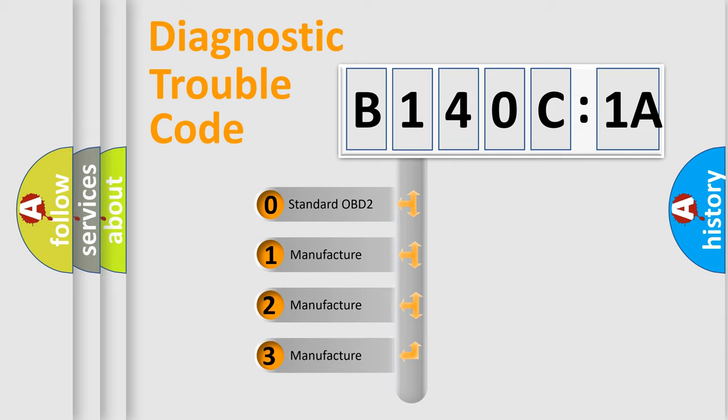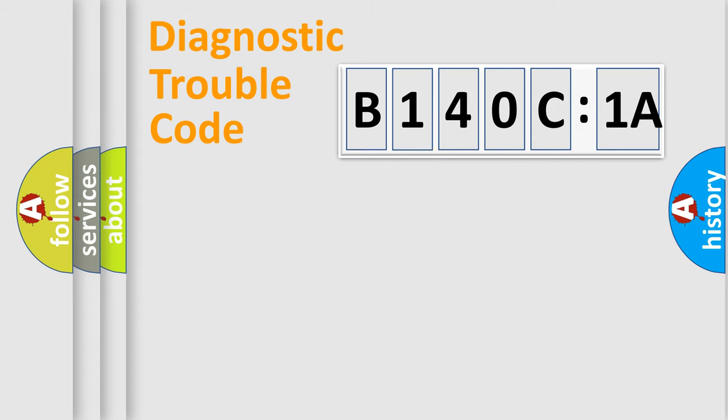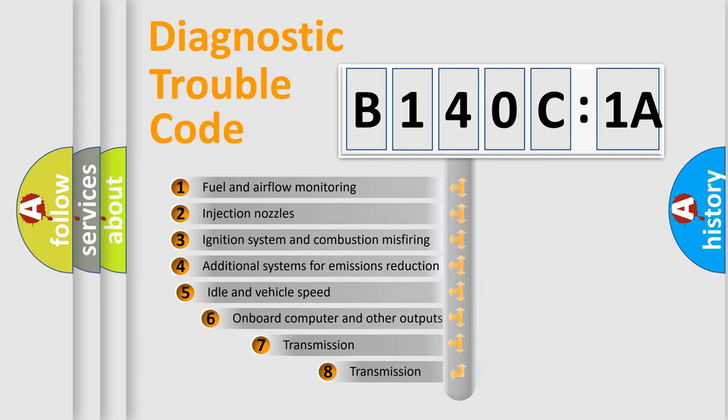If the second character is expressed as zero, it is a standardized error. In the case of numbers 1, 2, 3, it is a manufacturer-specific expression of the car error.